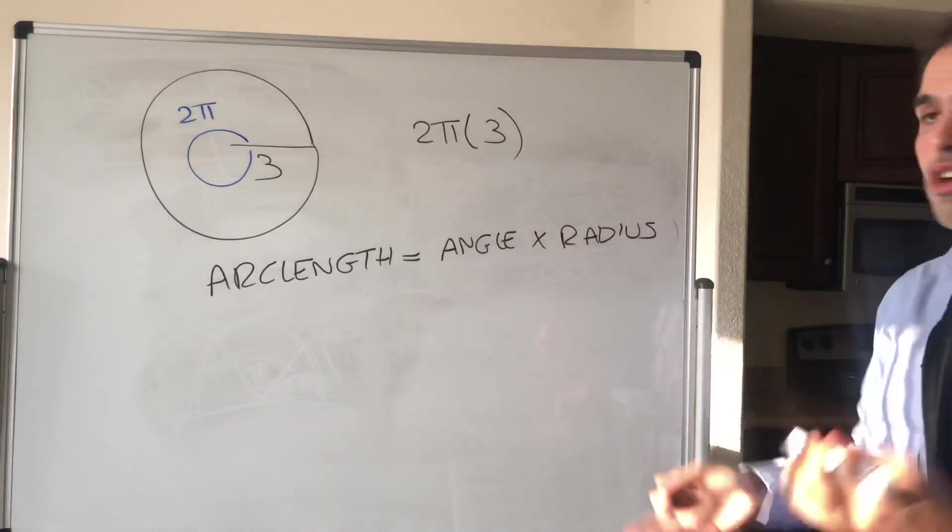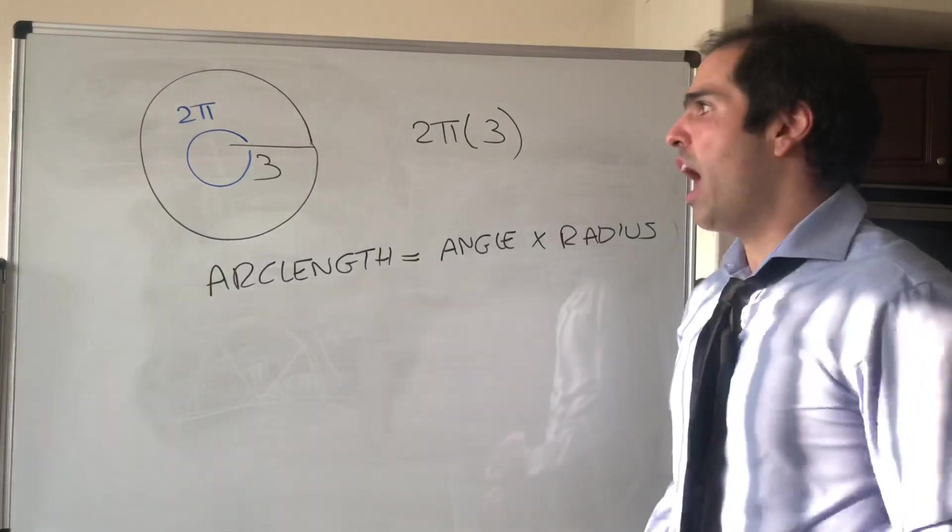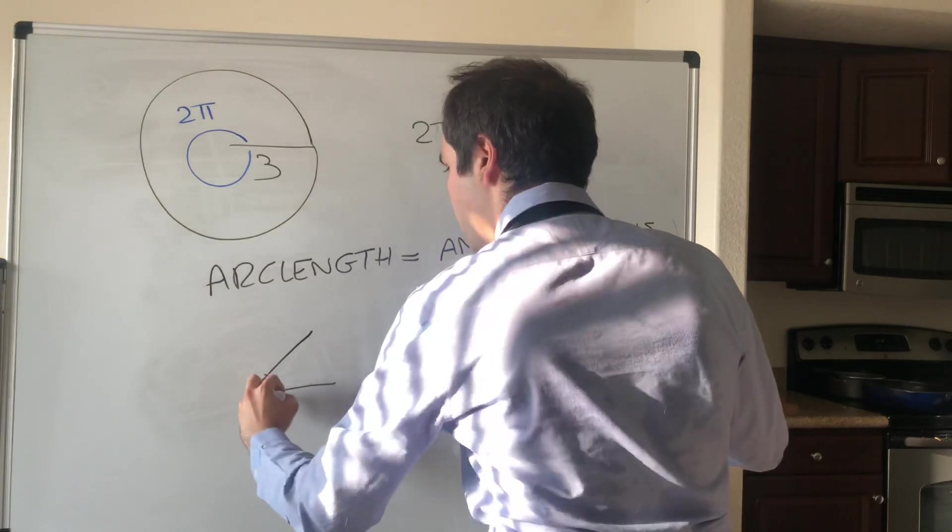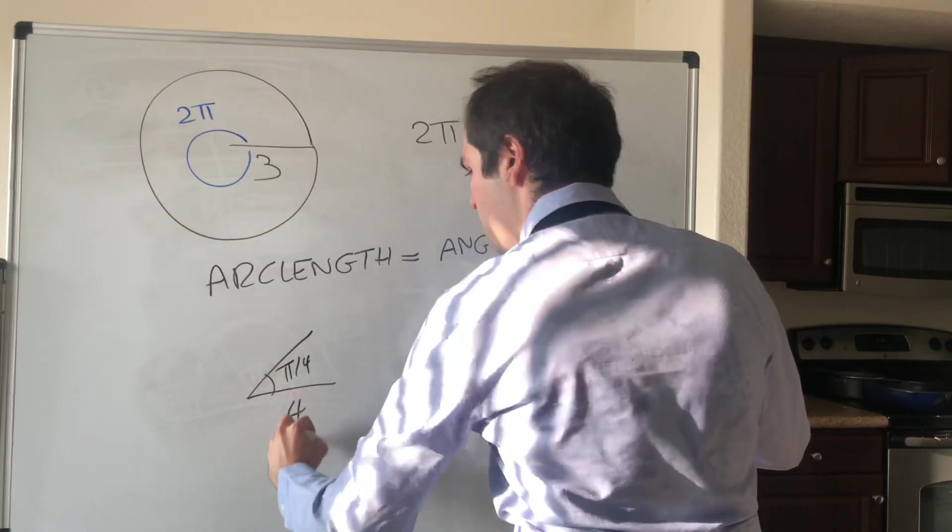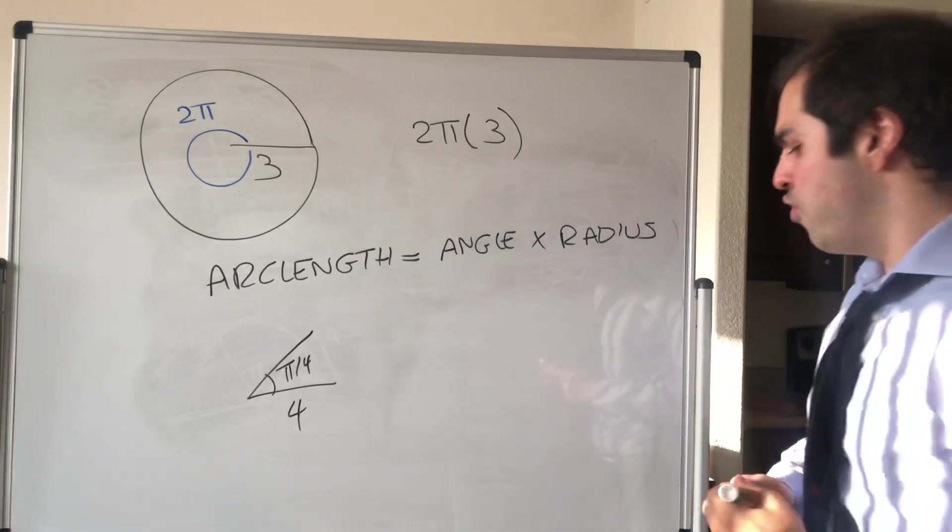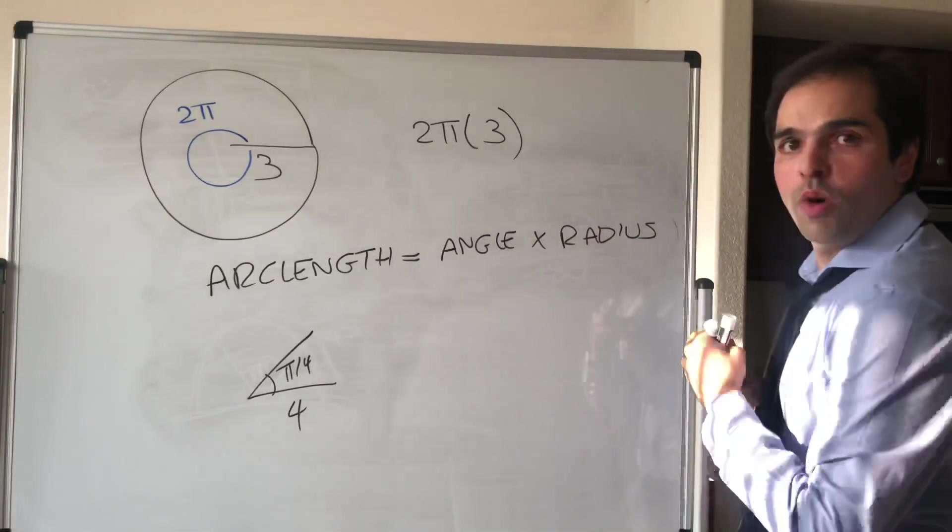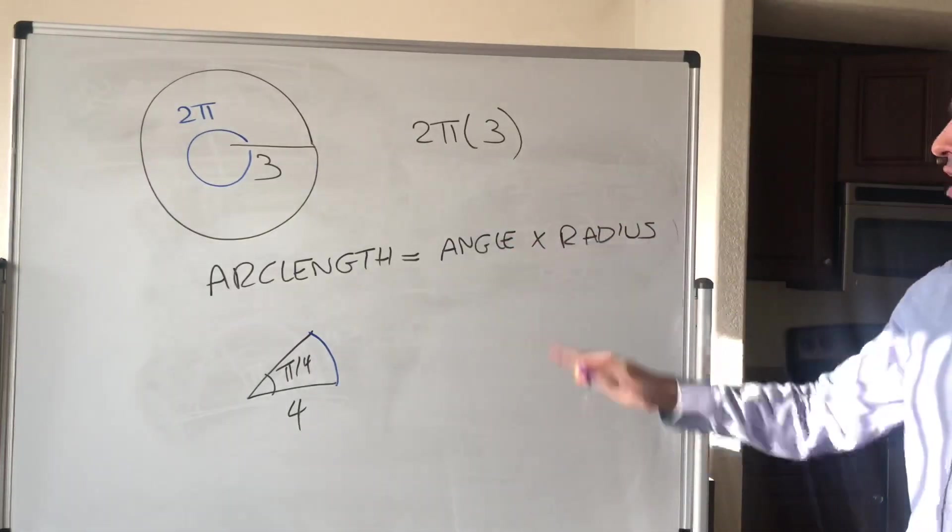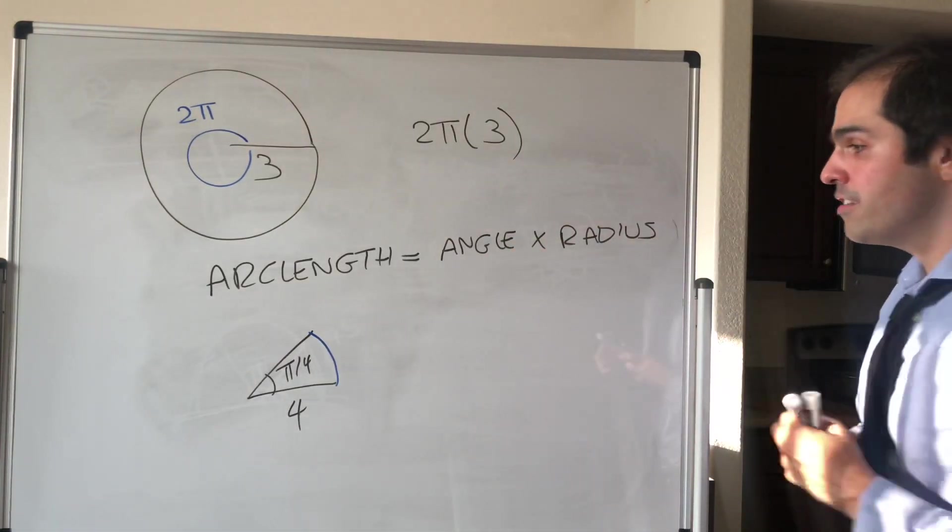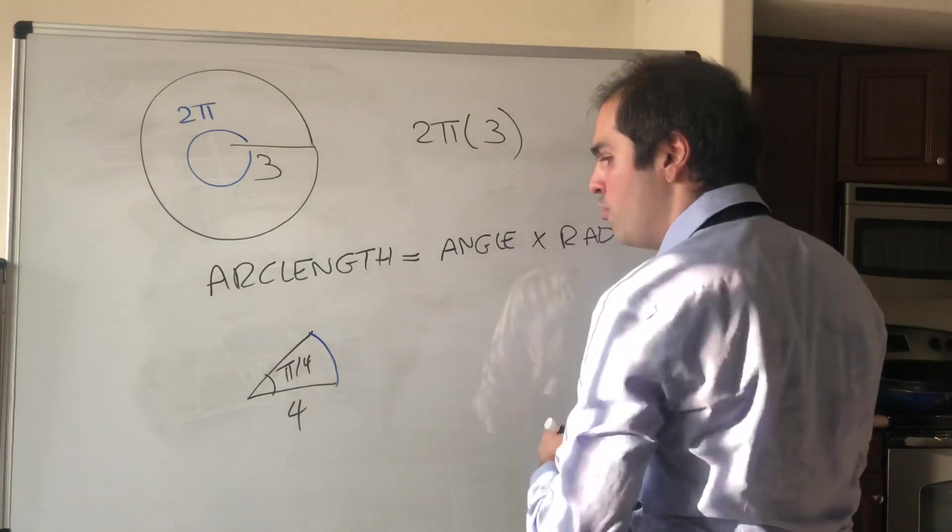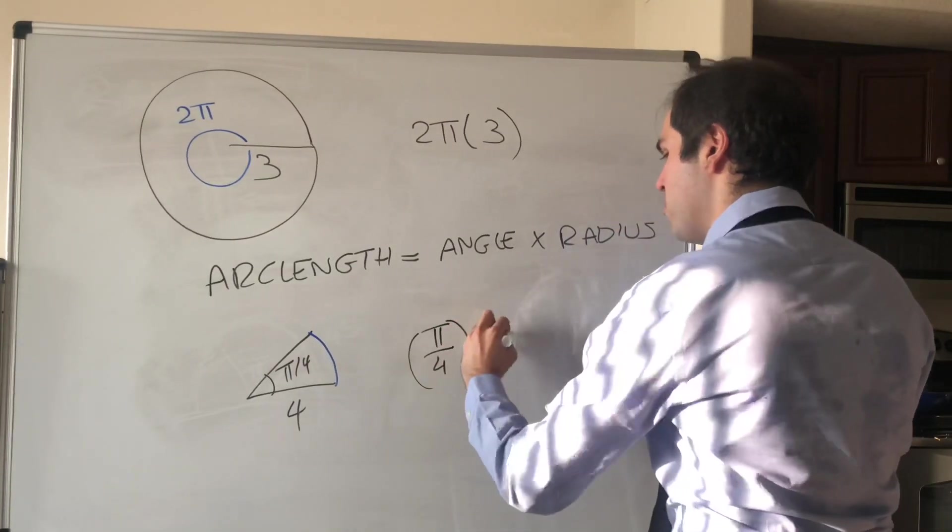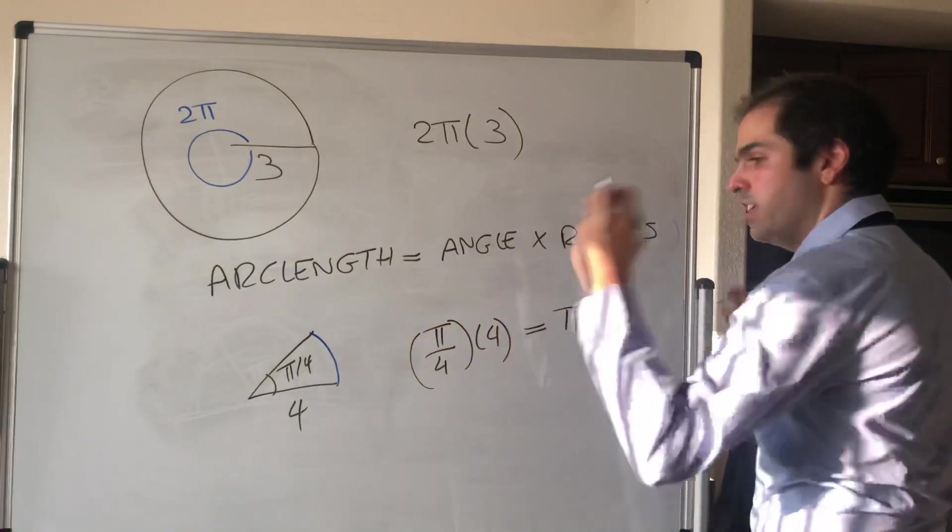So for instance, suppose you have an angle of π/4, again 45 degrees, and a circle of radius 4. Then the question is, what is the arc length here? Again, by that formula, what makes it nice is that it's just π/4 times 4, and that gives you π.